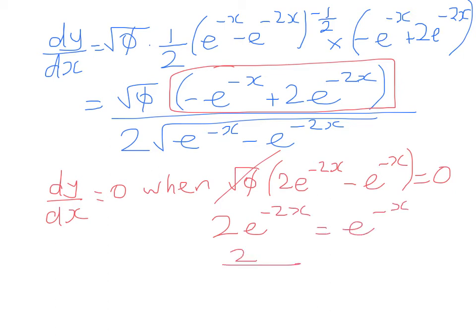Cross multiplying, 2e to the x is equal to e to the power of 2x. 2 is equal to e to the power of x. And x is equal to the natural log of 2.